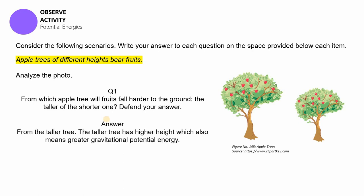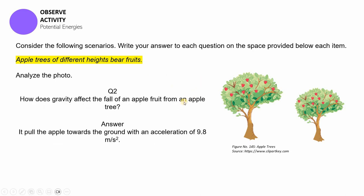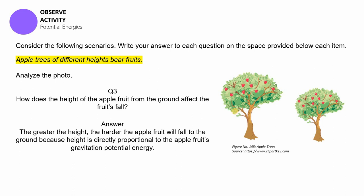For the apple tree scenario, the answer for question one is: from the taller tree, because the taller tree has a higher height which also means greater gravitational potential energy. Question two: gravity pulls the apple towards the ground with an acceleration of 9.8 meters per second squared. The last question: the greater the height, the harder the apple fruit will fall to the ground, because height is directly proportional to the apple fruit's gravitational potential energy, as discussed in the introduction.